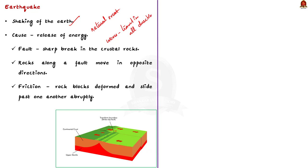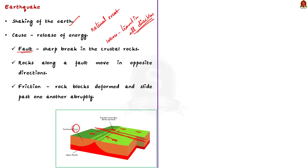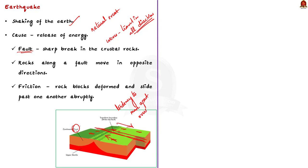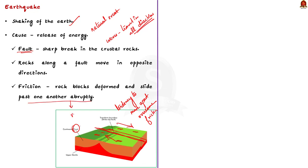The release of energy occurs along a fault. A fault is a sharp break in the crustal rocks. The rocks along the fault tend to move in opposite directions, but their tendency to move apart at some point overcomes the friction. As a result, these blocks get deformed and eventually slide past one another abruptly, causing a release of energy. The energy waves travel in all directions, and this abrupt slide causes the shaking of the earth.